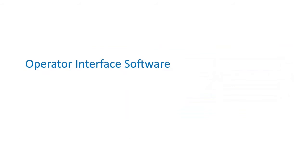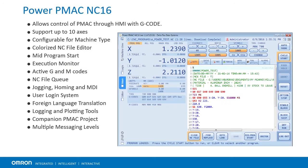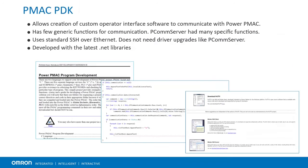Power PMAC is easier to use with operator interface software. Power PMAC NC16 allows control of PMAC through an HMI with G-code. It allows operator login, customization for machine type, mid-program start, and much more. The Power PMAC PDK allows creation of custom operator interface software to communicate with Power PMAC. It uses SSH for communication and was developed with the latest .NET drivers.